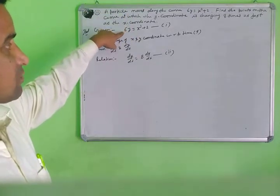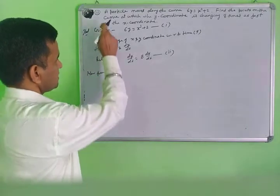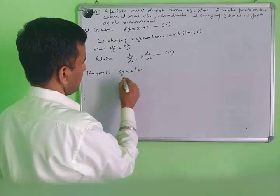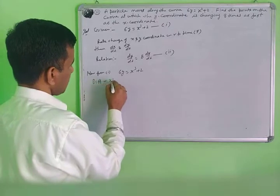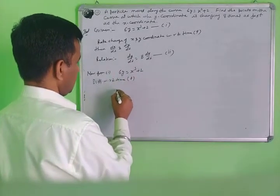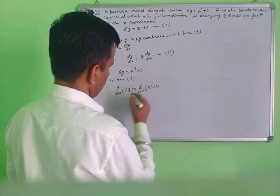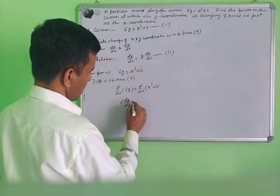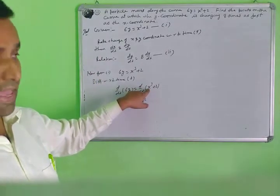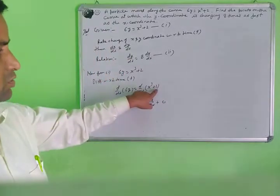Solution starts here. From the curve 6y equals x cubed plus 2, differentiate with respect to time t. We get 6 times dy over dt equals 3x squared times dx over dt plus 0, since 2 is a constant and its differentiation is 0.